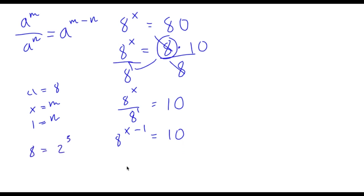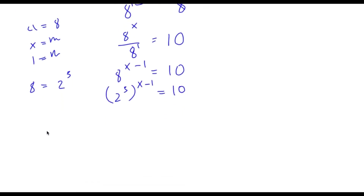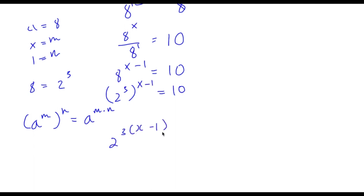Now 8 is the same thing as 2 to the power of 3. So I'm going to rewrite 8 to the power of x minus 1 as 2 to the power of 3 to the power of x minus 1 is equal to 10. Now if I have something in the form a to the power of m to the power of n, this is the same thing as a to the power of m times n. So 2 to the power of 3 to the power of x minus 1 is the same thing as 2 to the power of 3 times x minus 1 is equal to 10. We're going to distribute the 3, so this would be 2 to the power of 3x minus 3. This is equal to 10.